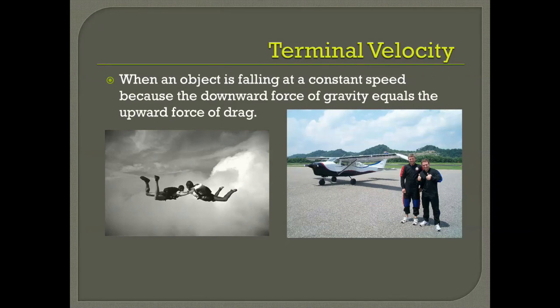Now let's talk about terminal velocity. Terminal velocity happens when an object is falling at a constant speed because the downward force of gravity is equal to the upward force of drag.